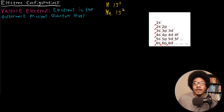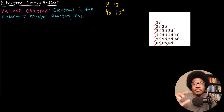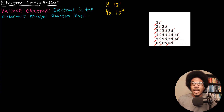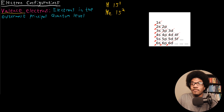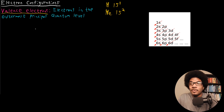One thing that electron configurations will be able to elucidate are the valence electrons for a given atom. Valence electrons are the electrons located in the outermost principal quantum level. These are really important in chemistry because those tend to be the electrons involved in reactions. The electrons that are donated, received, lost, or gained are always from the outermost principal quantum level.